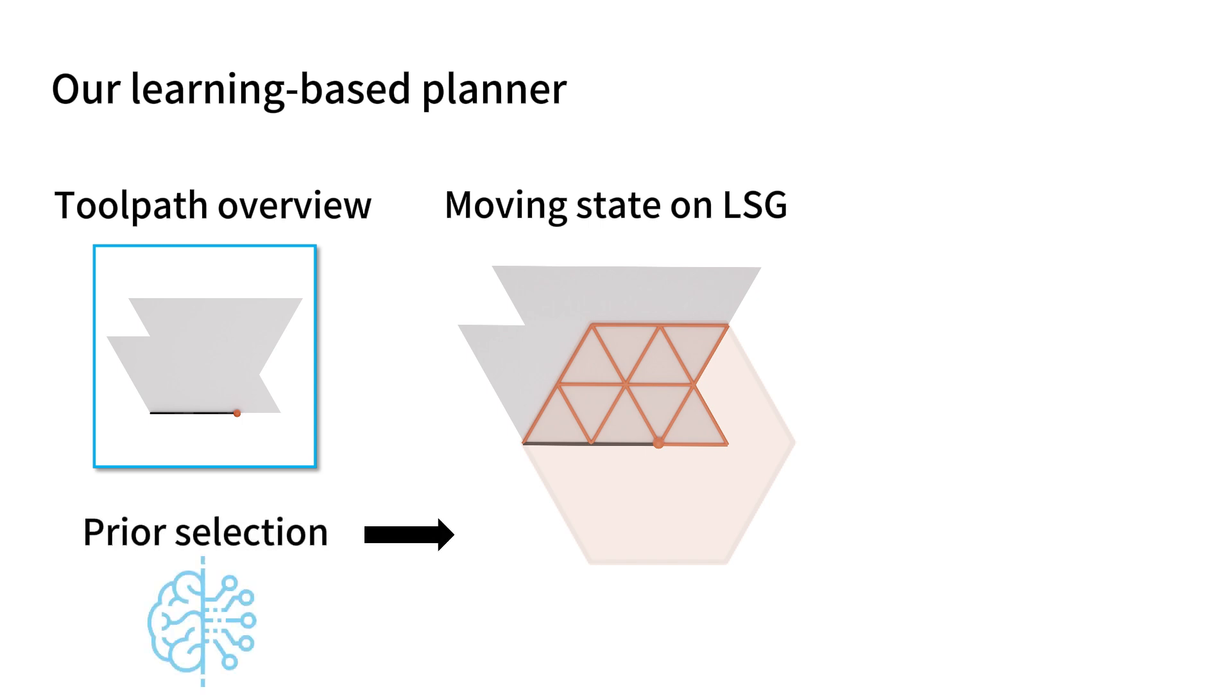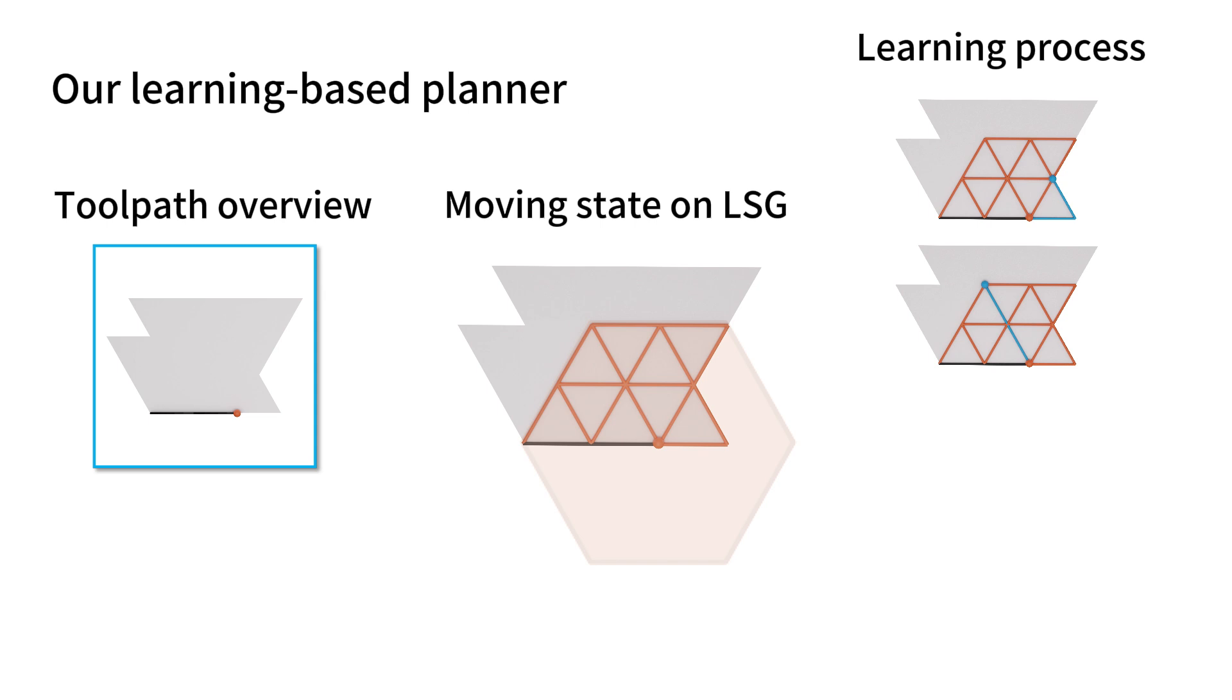During the planning process, our planner learns an updated DQN to compute the Q values on every node of a local search graph. The next best node is then determined by the node with the largest Q value.